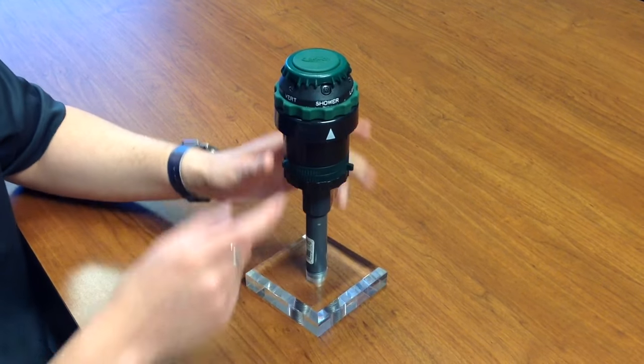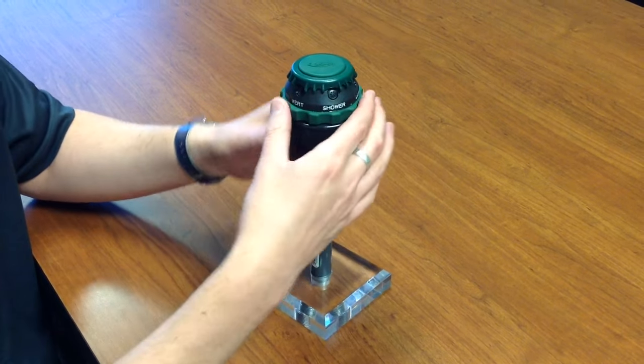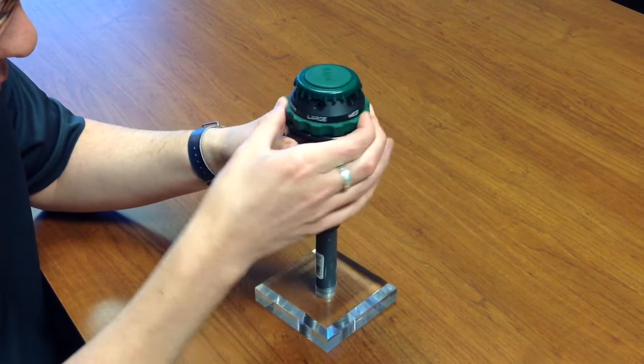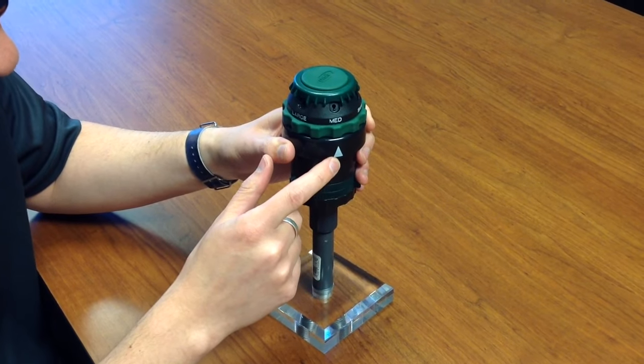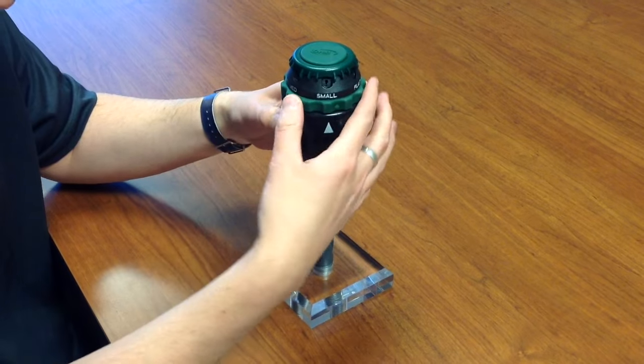So the first thing you need to select is the pattern that you want. The H206 has the patterns listed here around the top. You just turn this green ring to the one that you want. This white arrow indicates the pattern that's in use. So you have a large, medium, and small stream.